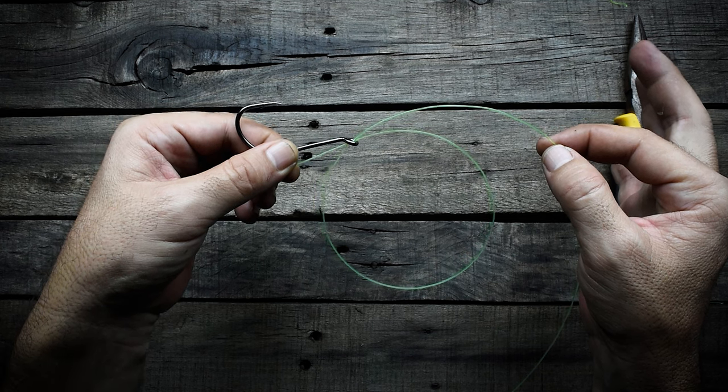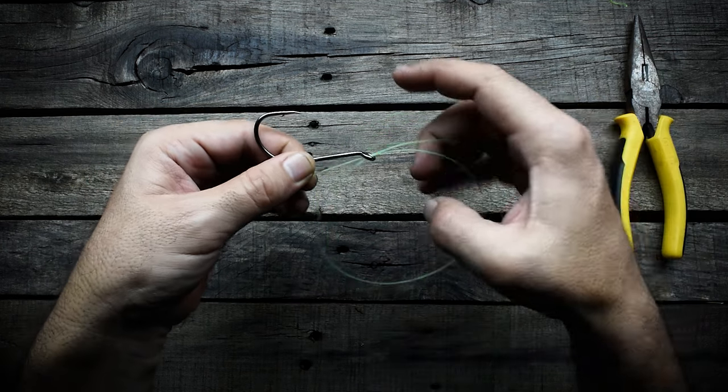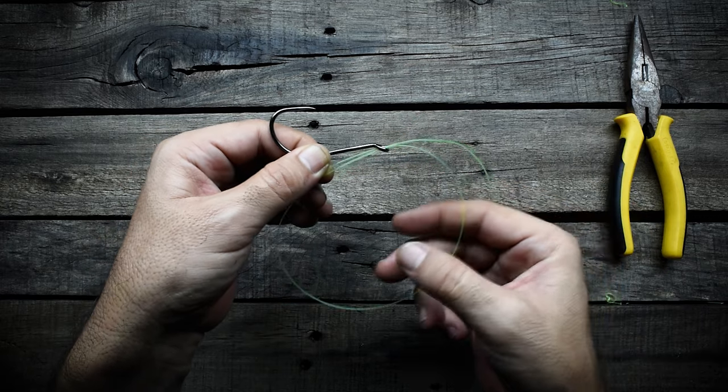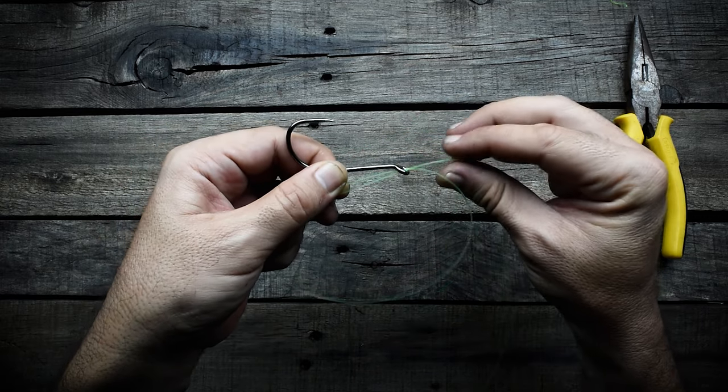And this has to be long enough so you can pull it, because you're going to have to pull it later. Then I grab the part of the line that is bent and I'm going to put my thumb in it.